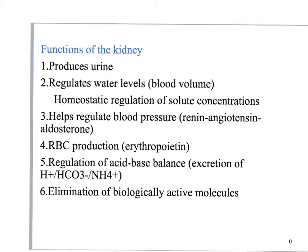Kidneys also regulate red blood cell production because they produce erythropoietin. When there is a diminished capacity for the blood to bind oxygen, that is a stimulus for the production and release of erythropoietin, which stimulates the production of more red blood cells. The kidneys also regulate acid-base balance — we'll discuss that in chapter 25 — and they work to excrete hydrogen ions, bicarbonate ions, and ammonia. They also eliminate biologically active molecules like hormones, drugs, and metabolites.